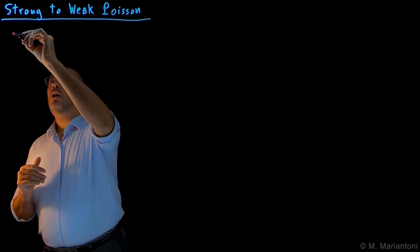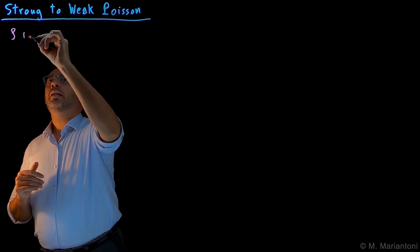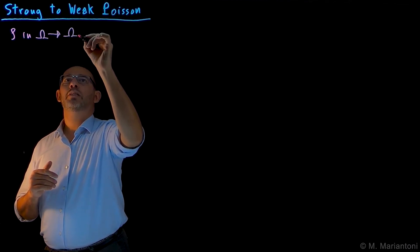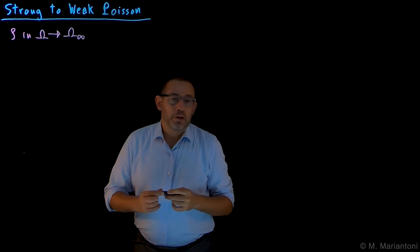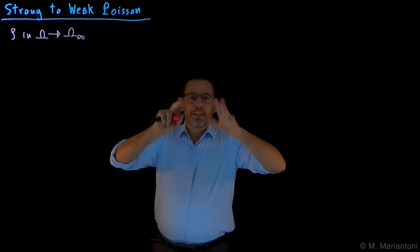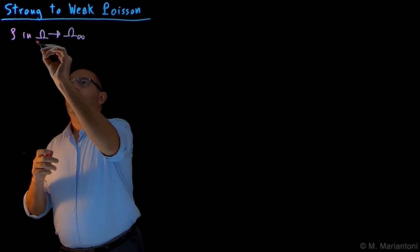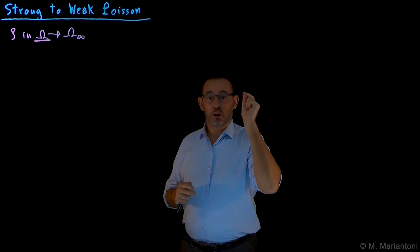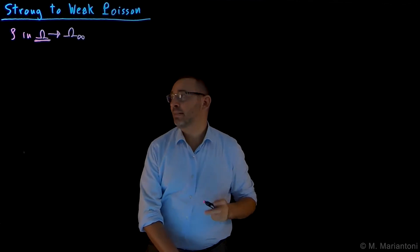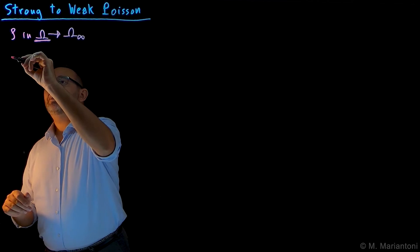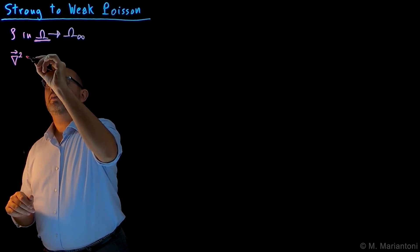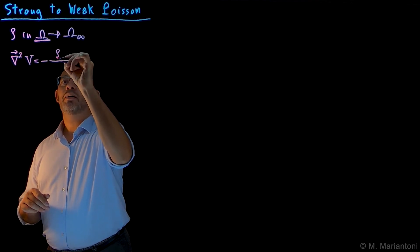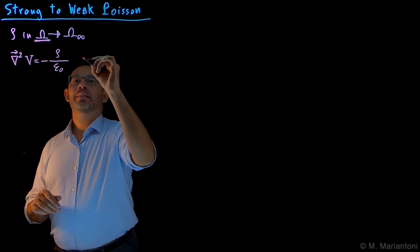Let's consider a rho defined in a region of space, capital omega, which eventually can be extended to the entire universe — capital omega infinite — assuming that rho is zero anywhere outside this capital omega region. What is the strong formulation of the Poisson problem? It tells us that the scalar Laplacian of the electrostatic potential V has to be equal to minus rho divided by epsilon naught. This is strong Poisson.